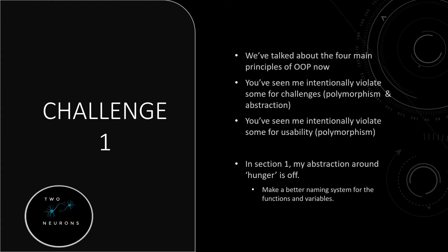I want to provide you three challenges. We've talked about the four main principles of OOP: encapsulation, inheritance, abstraction, and polymorphism. You've seen me intentionally violate some of these — polymorphism for some usability features, and abstraction is something I haven't mentioned I'm intentionally violating until now.